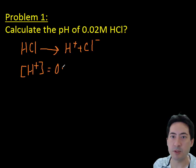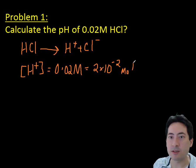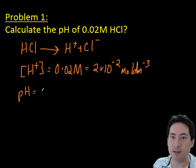So the hydrogen ion concentration will just be the same because it completely dissociates, and so we get a hydrogen ion concentration of 2 by 10 to the minus 2 moles per liter. We then take the negative log of that and that gives us 1.7.